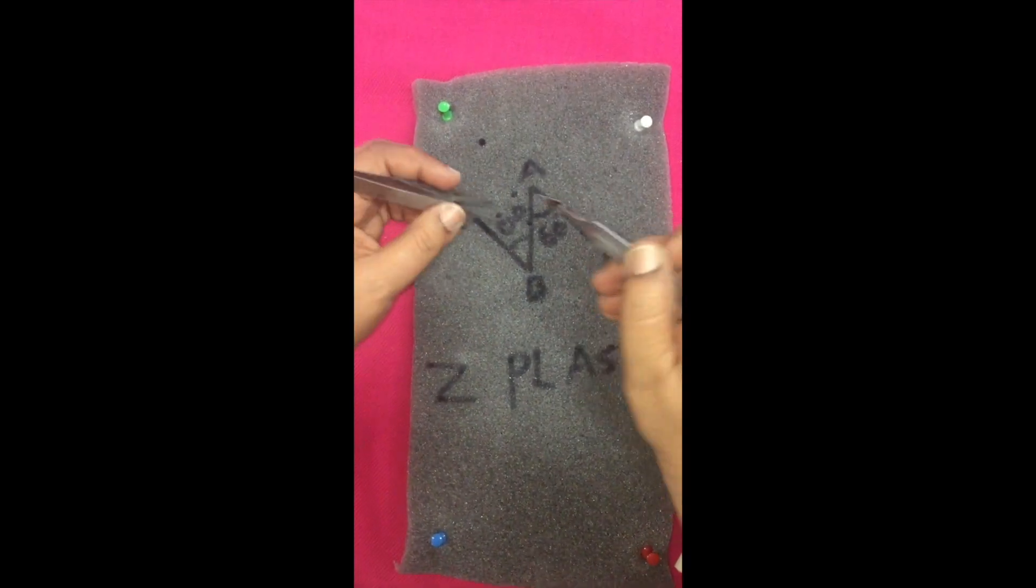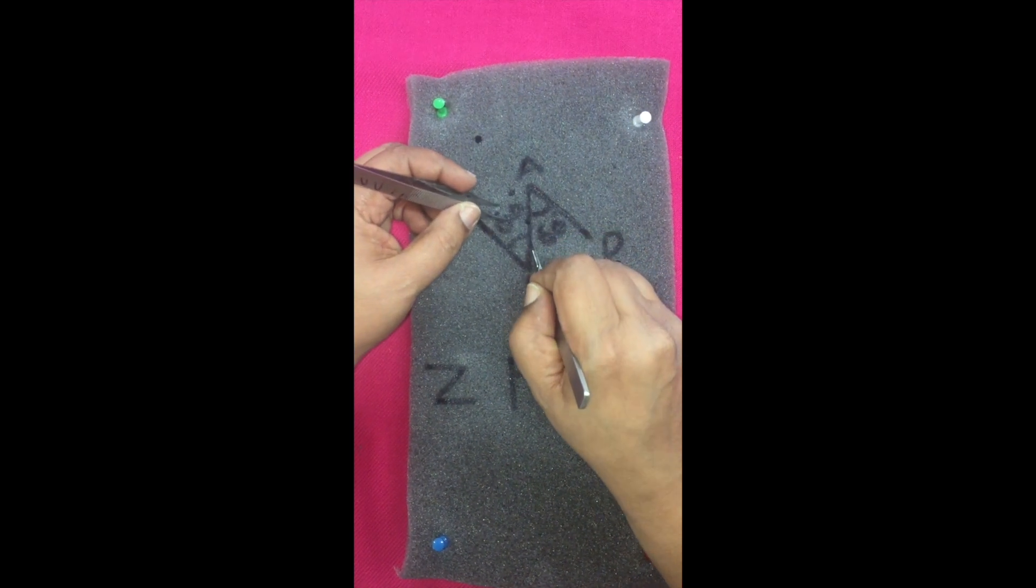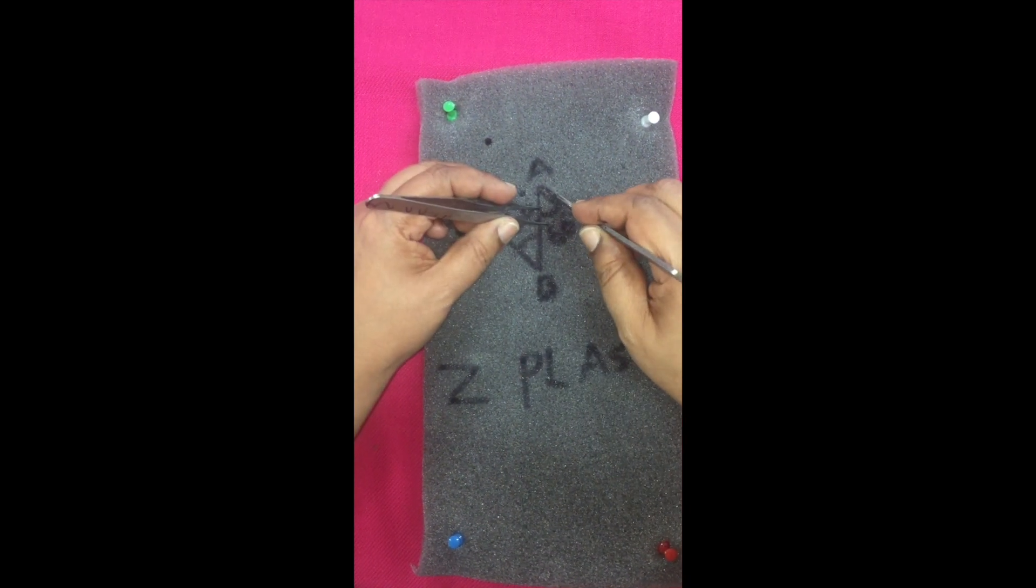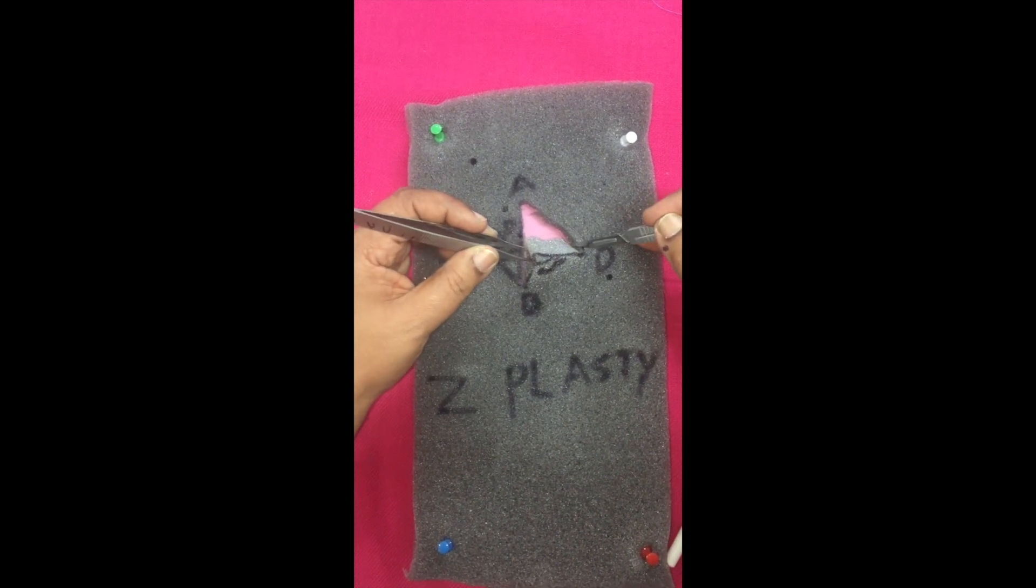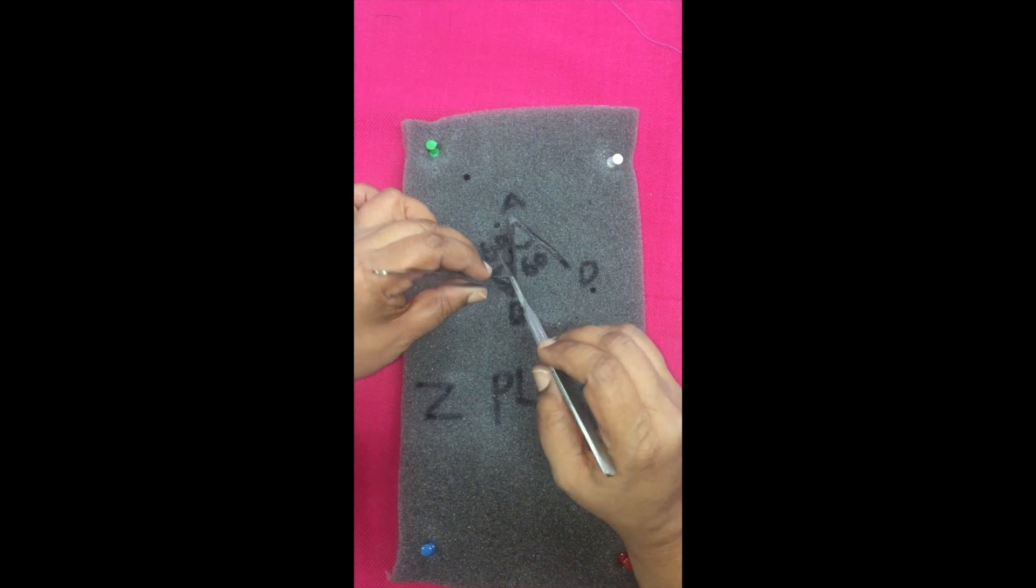The incisions are made down to the subcutaneous tissue so that this flap, which is going to be a random pattern flap in real life, is going to survive.